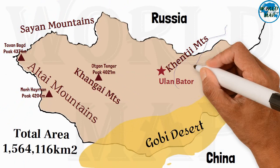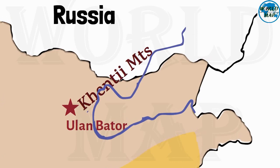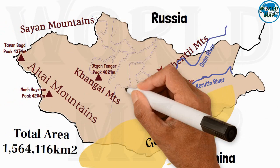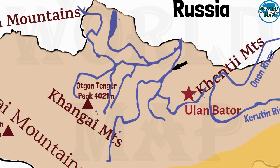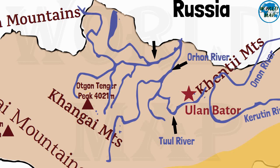Rivers of Mongolia: Onon River, Kherlen River, Orkhon River, Tuul River, Selenge River.